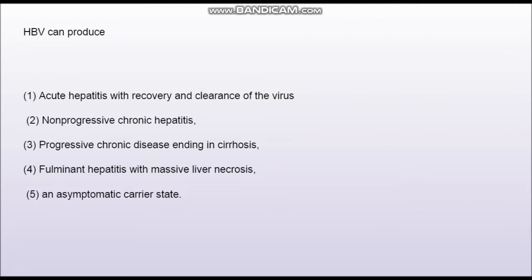So to summarize the disease spectrum: a patient can have acute hepatitis with recovery and clearance of the virus; a patient can have non-progressive chronic hepatitis; a patient can have chronic disease ending in cirrhosis and may also develop cancer. Very rarely, fulminant hepatitis with massive liver necrosis occurs, and the majority of patients have an asymptomatic stage.